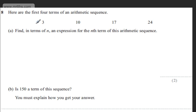This is question number eight. It says here are the first four terms of an arithmetic sequence: three, ten, seventeen, and twenty-four.